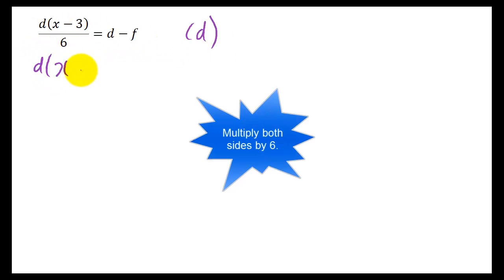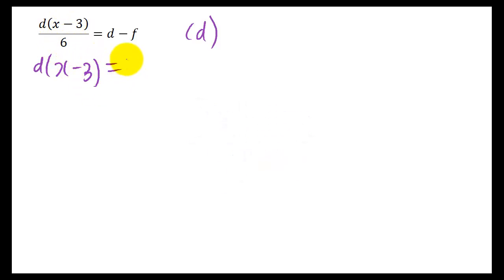That leaves us D(X minus 3), times this by 6, that just cancels out with that 6. And we're going to times everything here by 6. So 6 times D and 6 times F. Imagine you've got brackets here and you're multiplying it out.